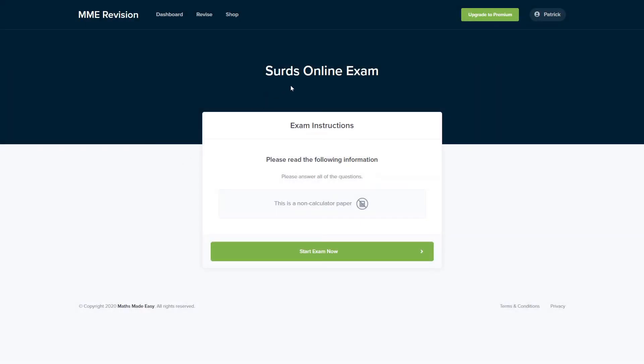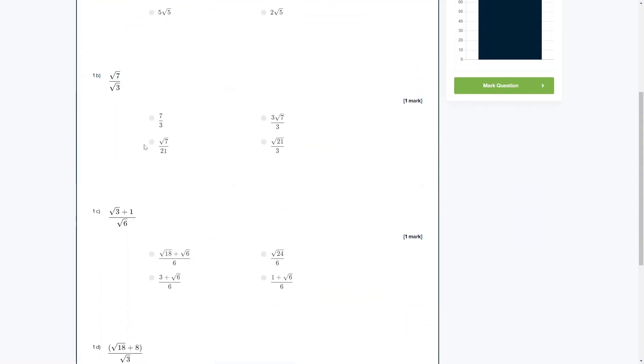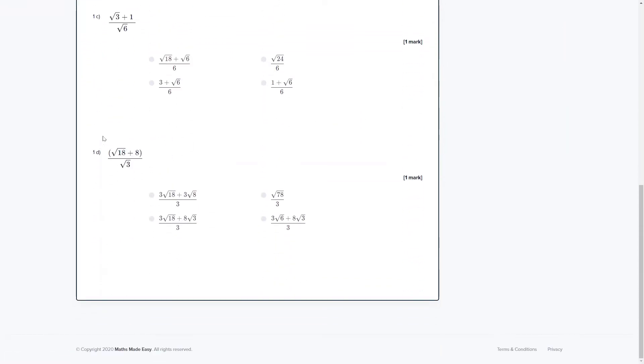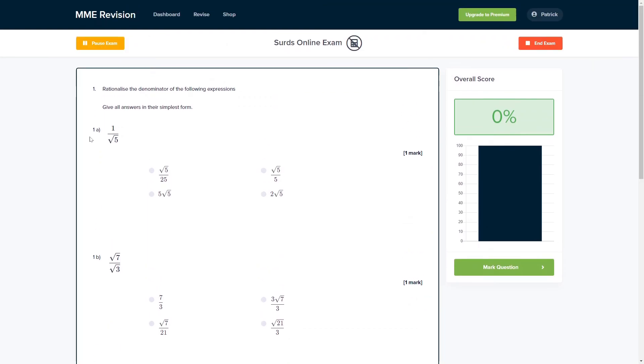If you're feeling good about surds and you want to get some practice in, you can do so with our online exam. It's available through our revision platform. So here you'll find loads of different questions to have a go at. All of which are instantly marked so you get feedback straight away. Allowing you to keep track of where you're going wrong and how you can improve for your exam. So if this is something you're interested in, you can click the link below and it will take you straight there.